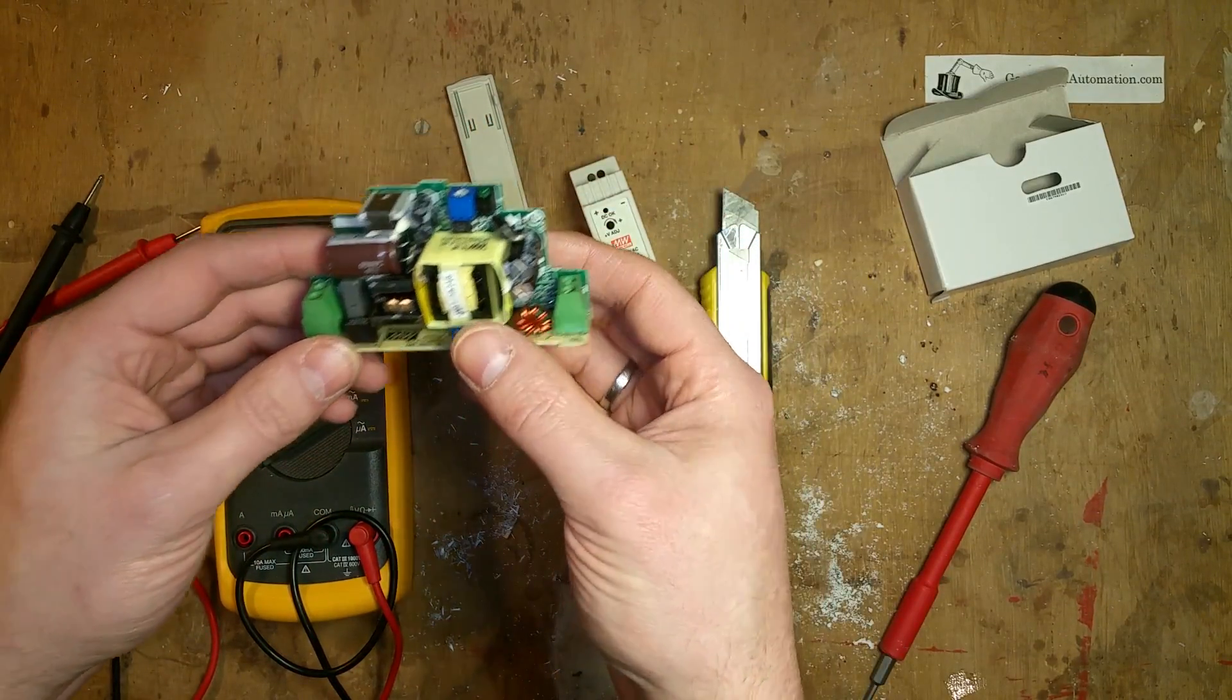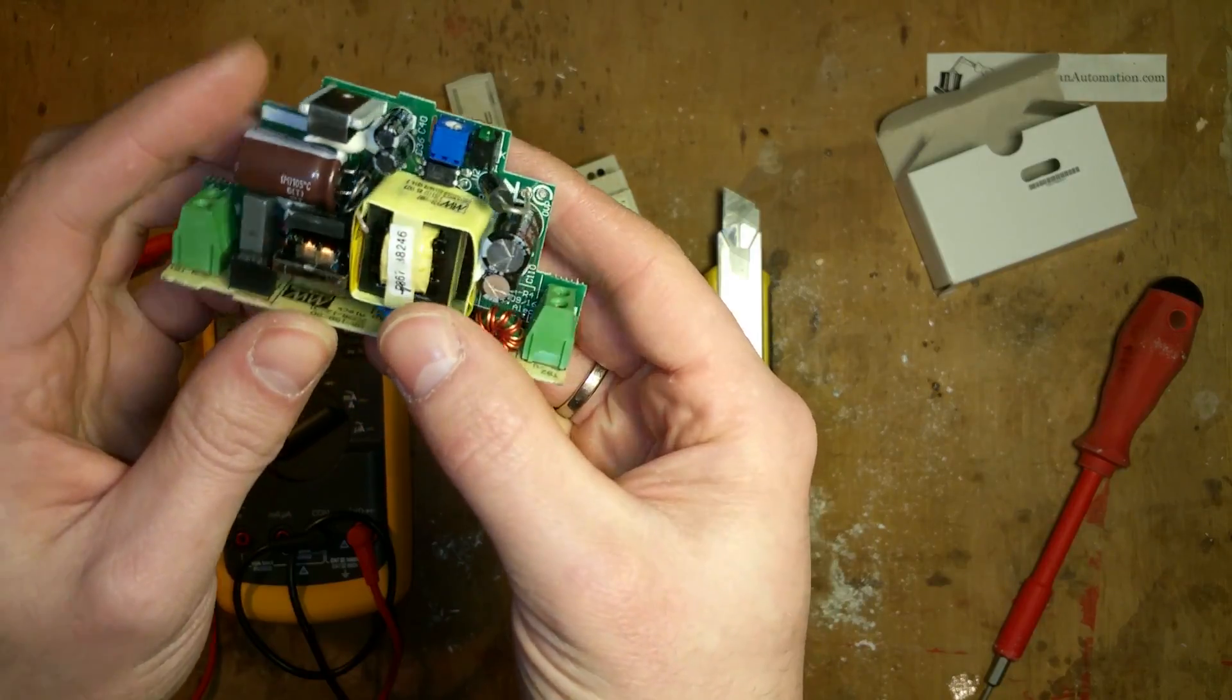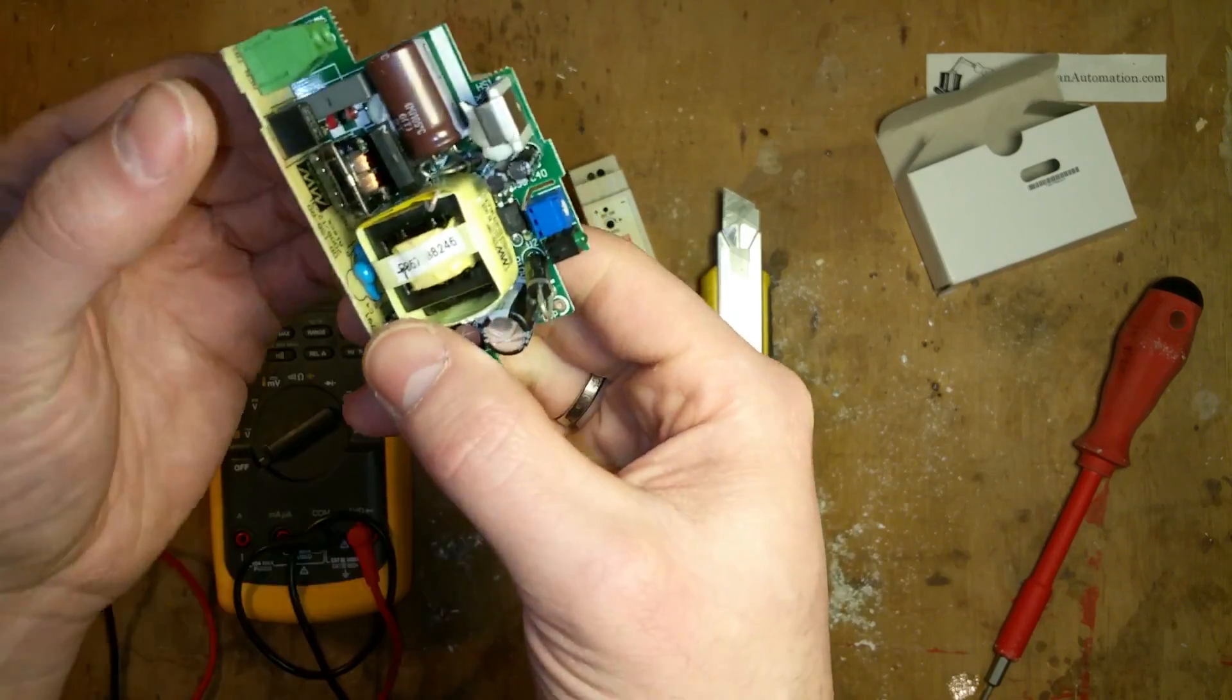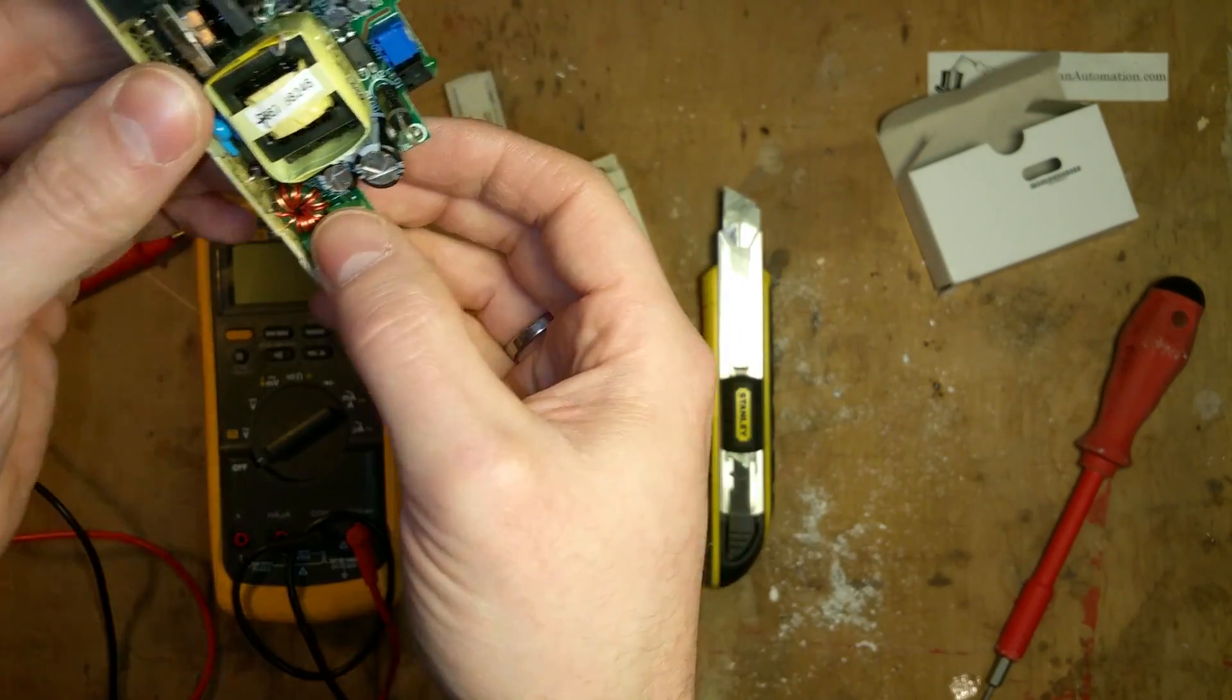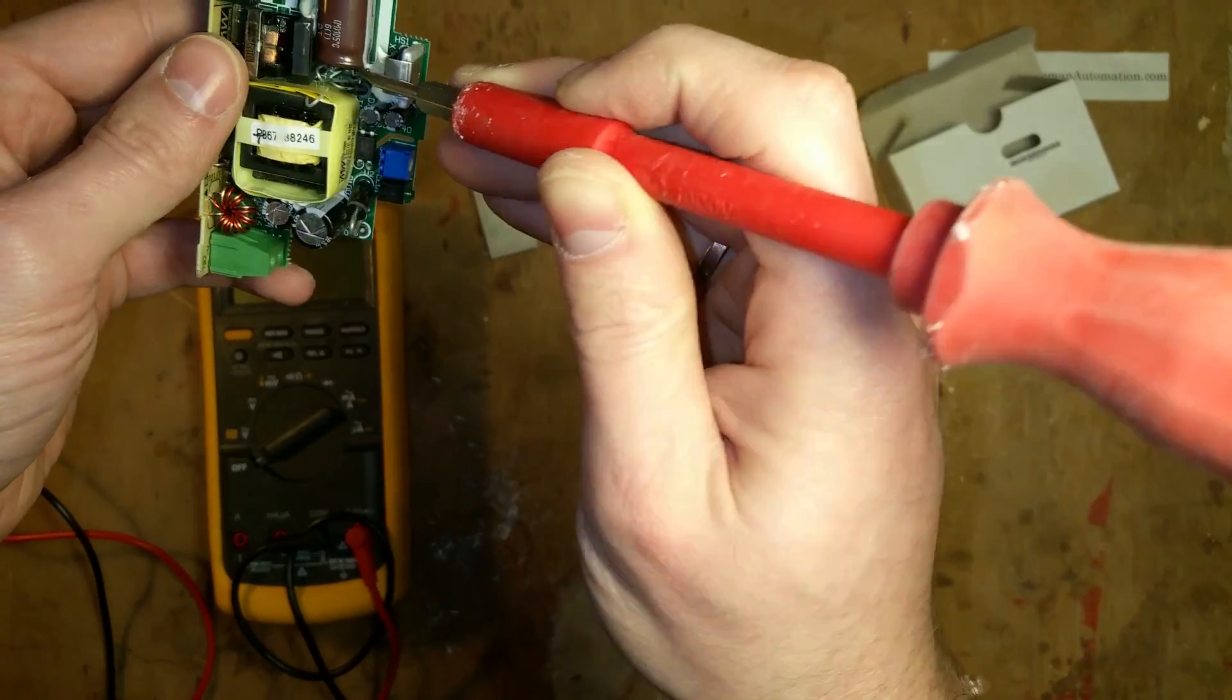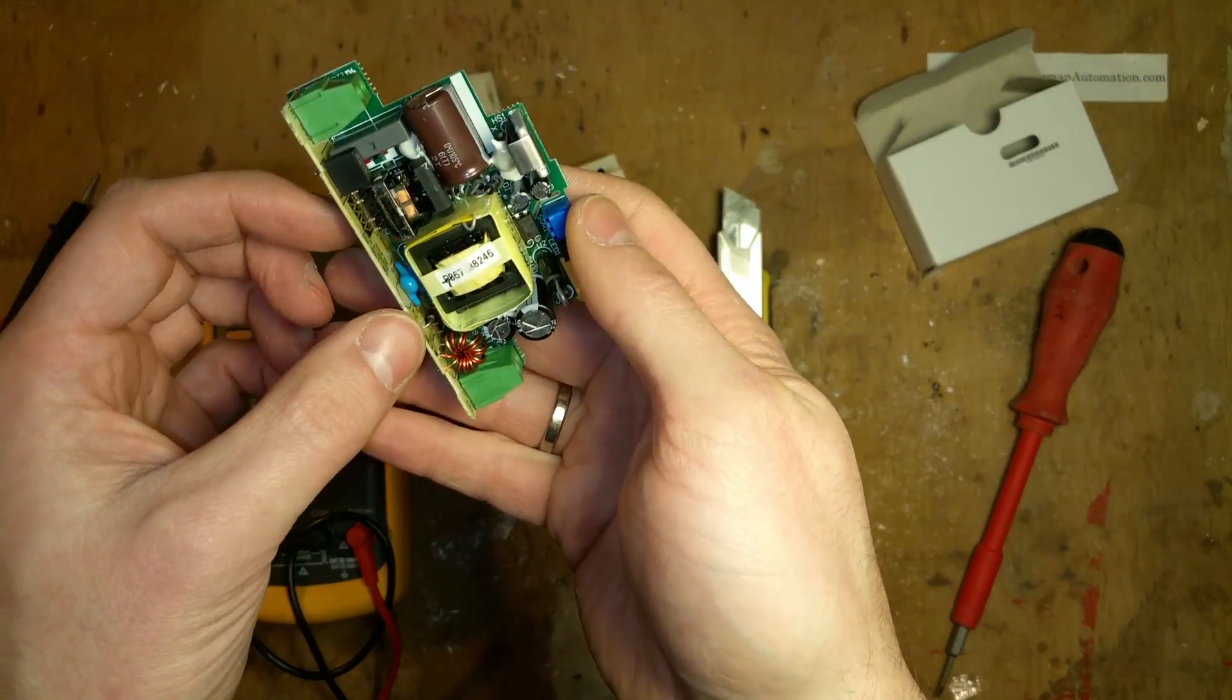Here we see an optocoupler. This is also very interesting to have because it provides feedback. All these cheap knockoff adapters that you buy on eBay, they virtually never have a feedback from the output back to the input. Look, they even put little ferrite components. I don't know what they're doing.